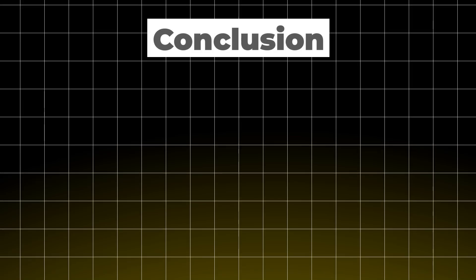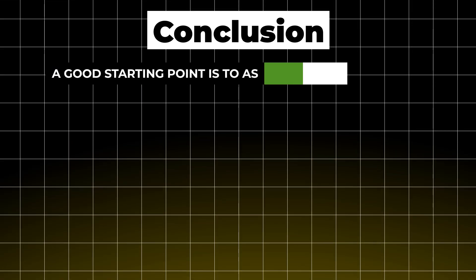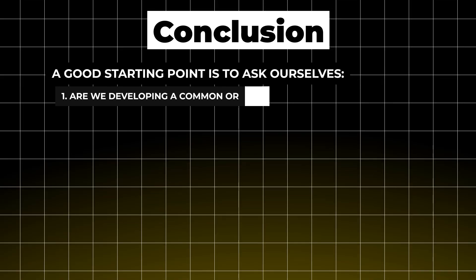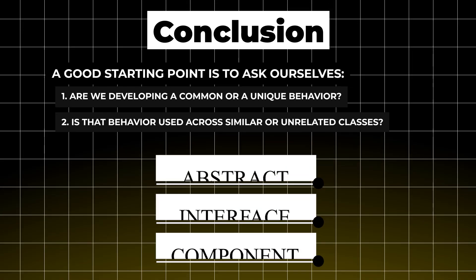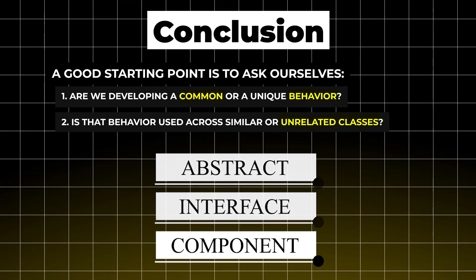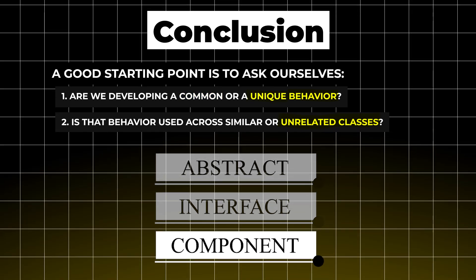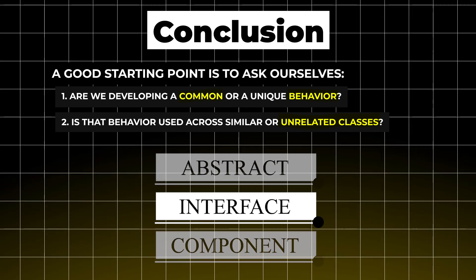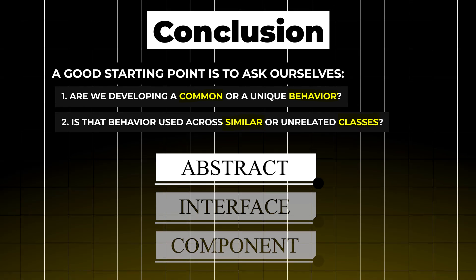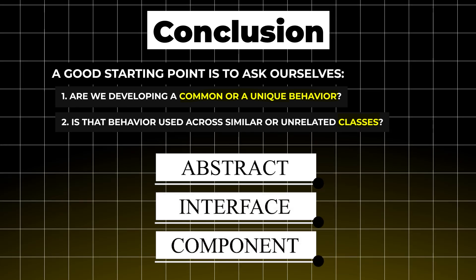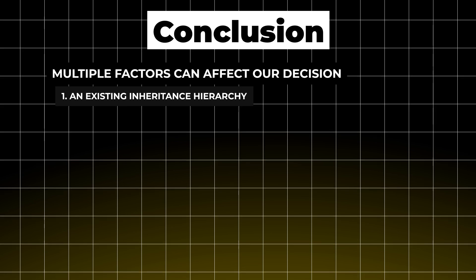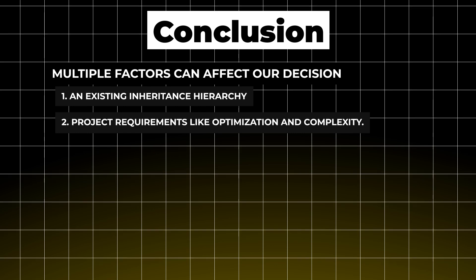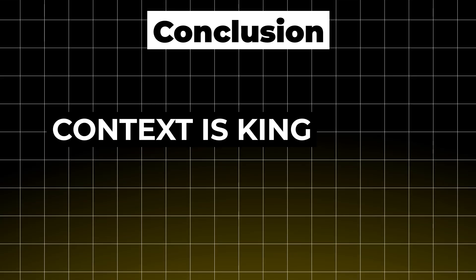To summarize: a good starting point is to ask yourself two questions — are we developing common or unique behavior, and is that behavior used across related or unrelated classes? Common behavior across unrelated classes: use components. Unique behavior across unrelated classes: use interfaces. Common behavior across related classes: use abstraction. Both common and unique behavior: use a hybrid approach. But this is only a starting point — existing inheritance hierarchies, optimization needs, and project complexity may shift the decision.